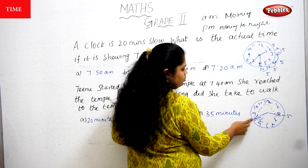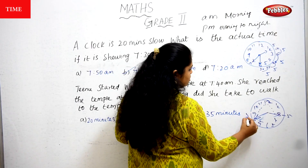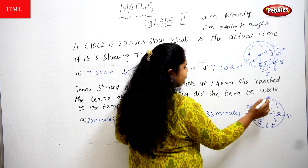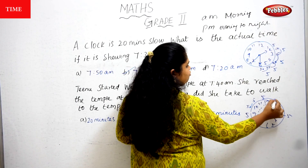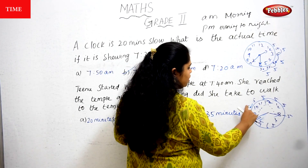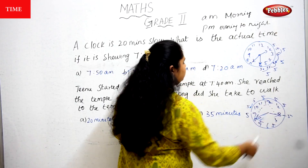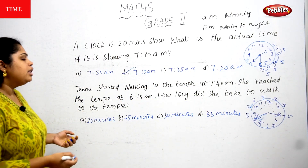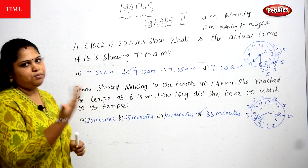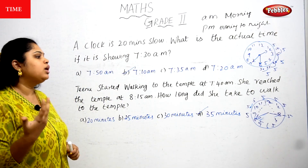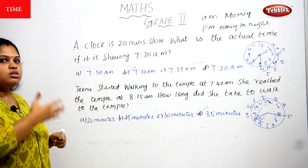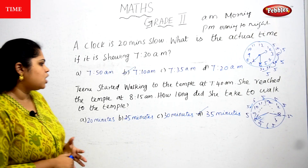He started from 40. So counting: 45 — 5 minutes; 50 — another 5 minutes; 55, 60, 5, 10, 15. That is 5, 10, 20, 30, 35 minutes. So Tinu takes 35 minutes to walk from home to temple. This is how we calculate the time difference.